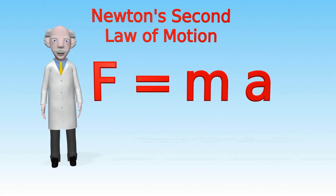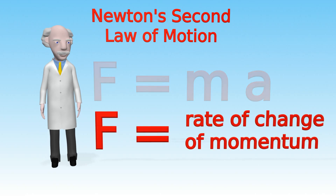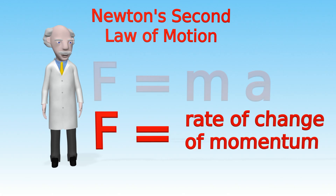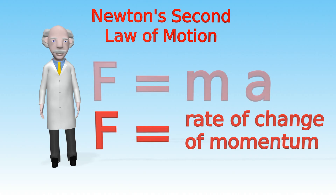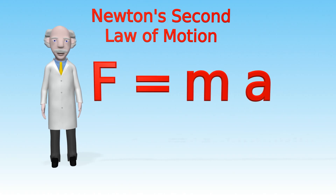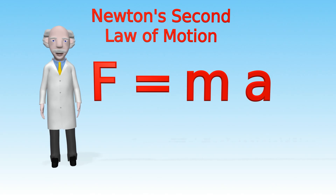You should note that F equals MA is in fact derived from the more exact definition of the second law, which is that the force equals the rate of change of momentum of the object, where momentum is defined as the object's mass times its velocity. However, today we'll study the law in the form F equals MA, and the best way for us to do that is to do an experiment.